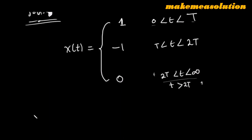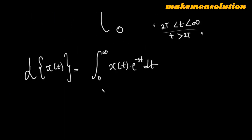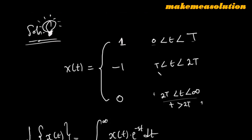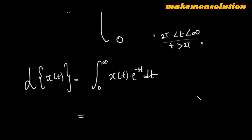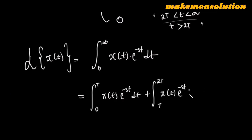Now that we've defined the behavior of x(t), the next step is to take the Laplace transform. The Laplace transform of x(t) is the integral from zero to infinity of x(t) exponential minus st dt. The next step is to break this integral from zero to infinity into three branches: zero to T, T to 2T, and 2T to infinity.